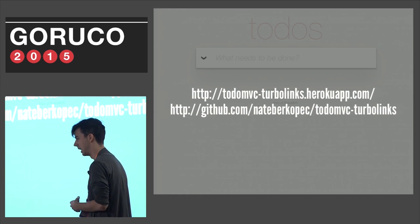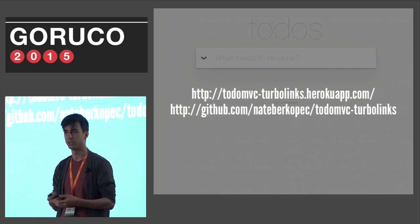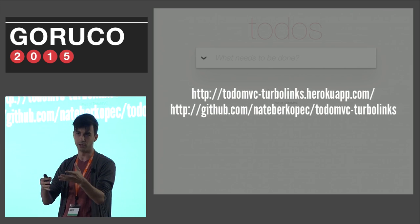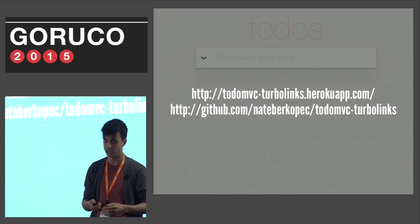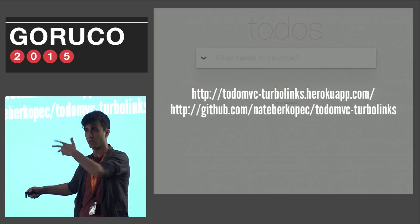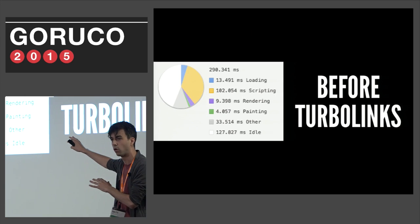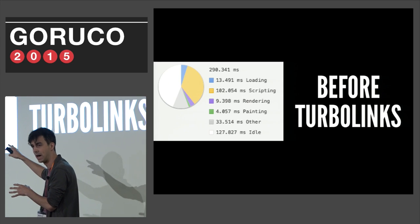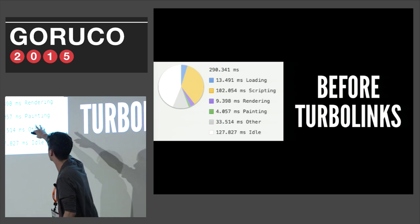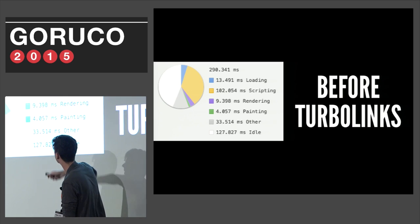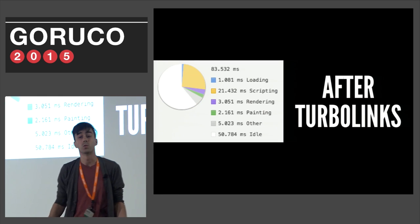As an experiment, I rebuilt the TodoMVC project — which is a project where you build a to-do list in different client-side JavaScript frameworks — using Turbolinks instead of client-side JS. That's available at the URL that will pop up at the end of this talk. This is what a Chrome Timeline page load on this to-do app looks like when you're not using Turbolinks. I just want you to pay attention to the time spent in loading, rendering, and painting. With the Turbolinks page load, that's greatly reduced.